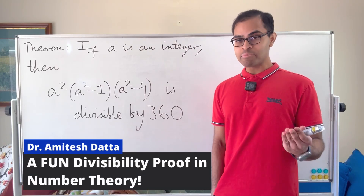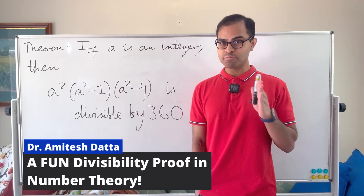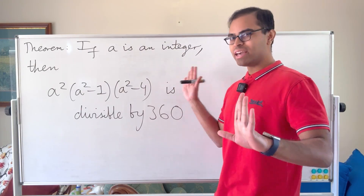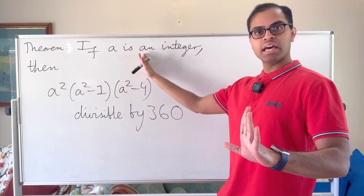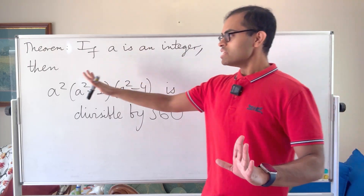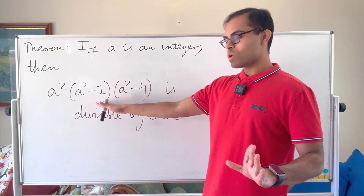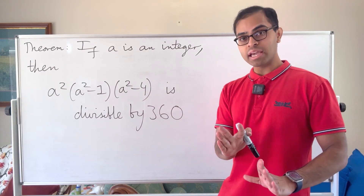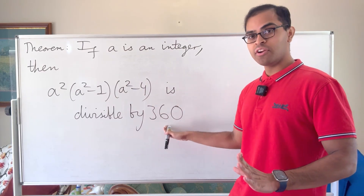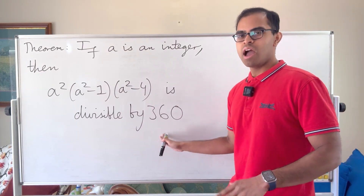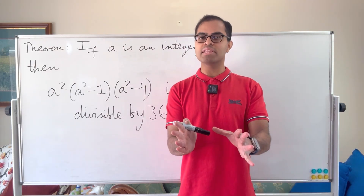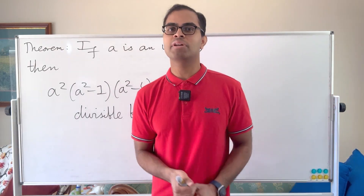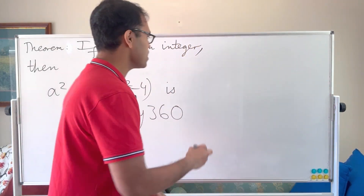Here's a fun little number theory exercise. I'm super excited to share with you and intuitively explain why this is true. So if a is an integer, then a squared times a squared minus 1 times a squared minus 4 is always divisible by 360. How are we going to prove this? It's super beautiful and very nice to explain, so let's just dive right into it.